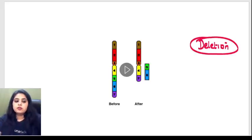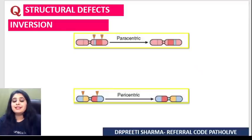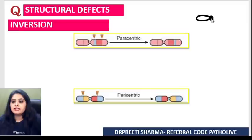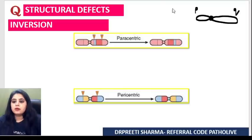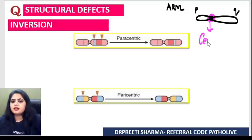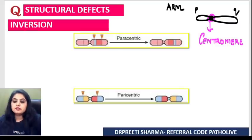Now let's move on to inversion — a part of the chromosome is getting inverted. Every chromosome has a short arm, the P arm, and a long arm, the Q arm, connected by the central point known as the centromere.